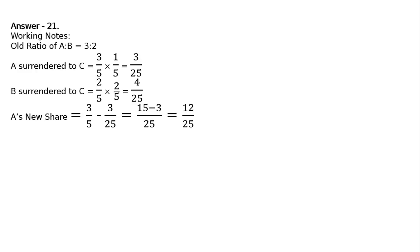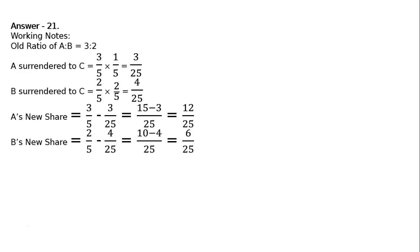B's new share in the same way: old share is 2 upon 5 minus surrendered share 4 upon 25. LCM 25, that is 10 minus 4, which is 6 upon 25. So A's new share is 12 upon 25 and B's new share is 6 upon 25.